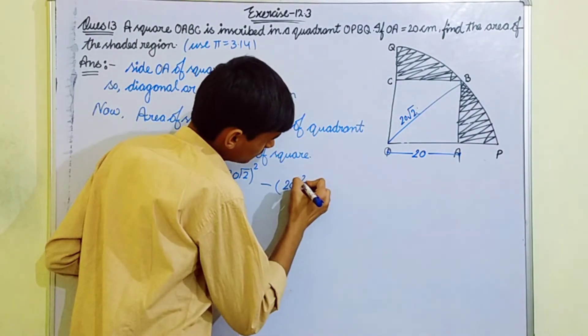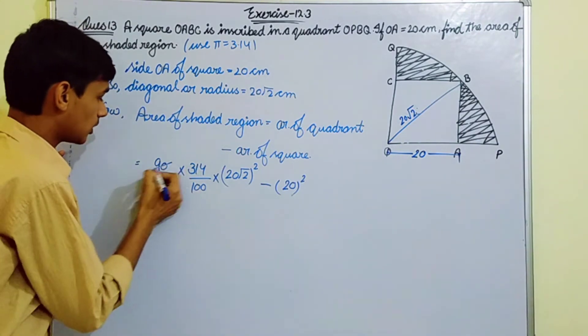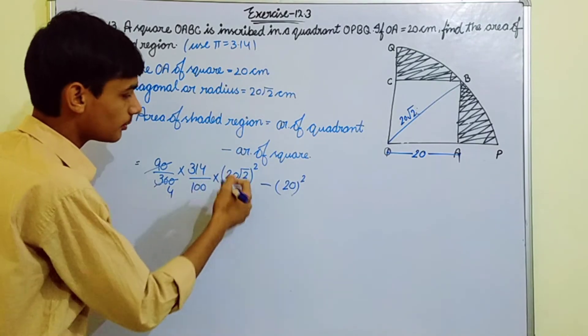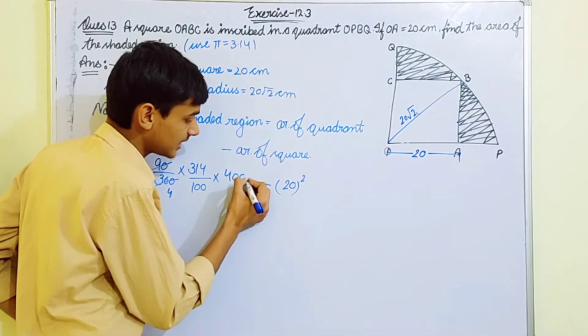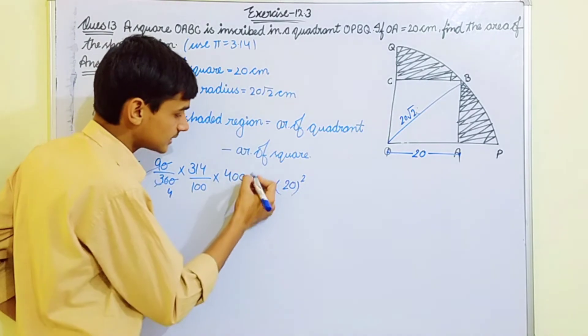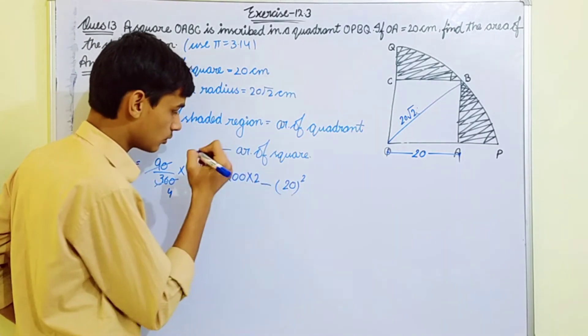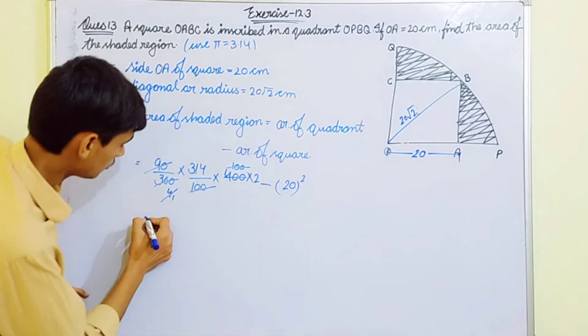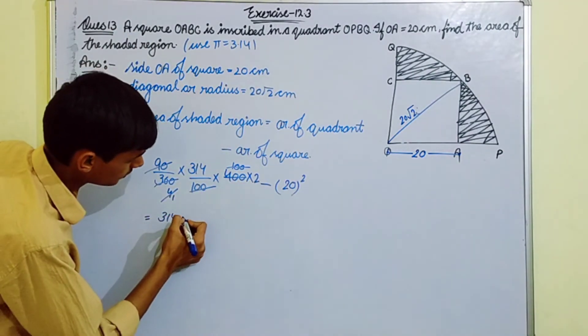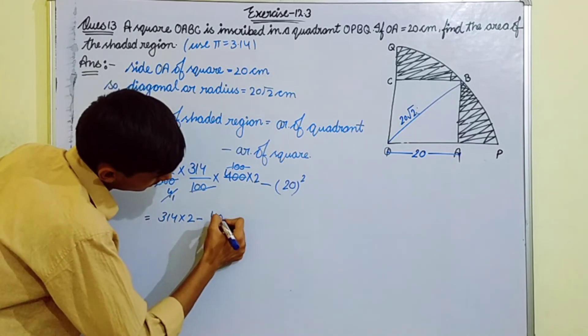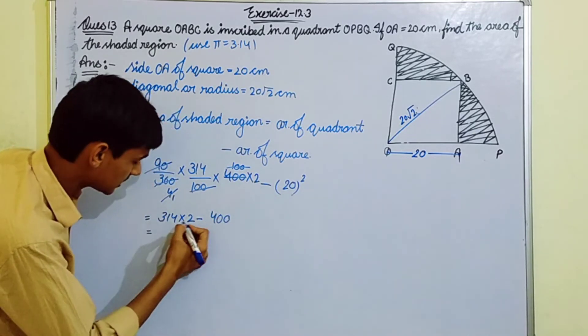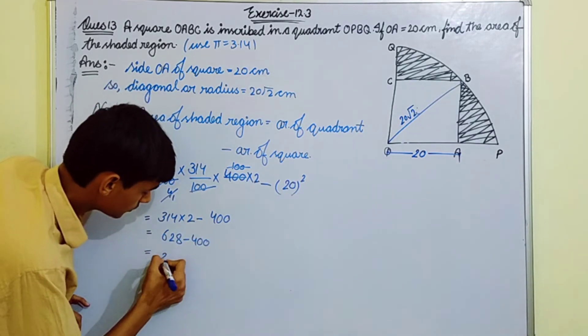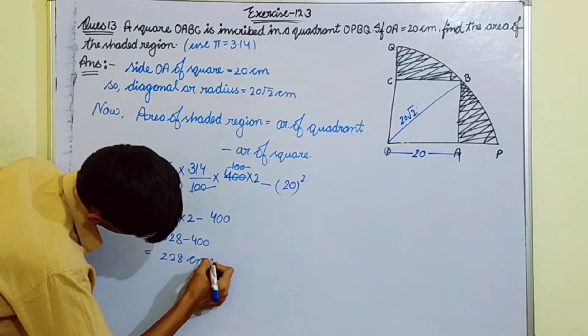20 squared. Now, when we solve this, the 4 will cancel. So we have 314 over 100 times 20 squared, and the square and root cancel when multiplied. This cancels out to give us 314 times 2 times 400 over 100. That comes to 628 minus 400, which equals 228 centimeter squared.